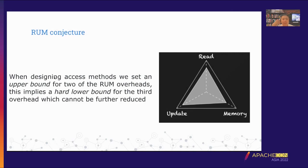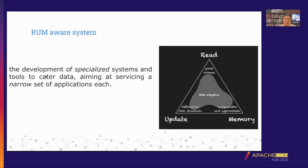An ideal solution would have the lowest read cost, lowest update cost, and require no extra memory — but in practice, data structures are designed to balance between the three RUM overheads. The optimal choice depends on hardware, workload, and user expectations. The RUM Conjecture states: when designing an access method, we set an upper bound for two of the RUM overheads, which implies a hard lower bound for the third overhead that cannot be further reduced. This opens paths for creating RUM-adaptive access methods.